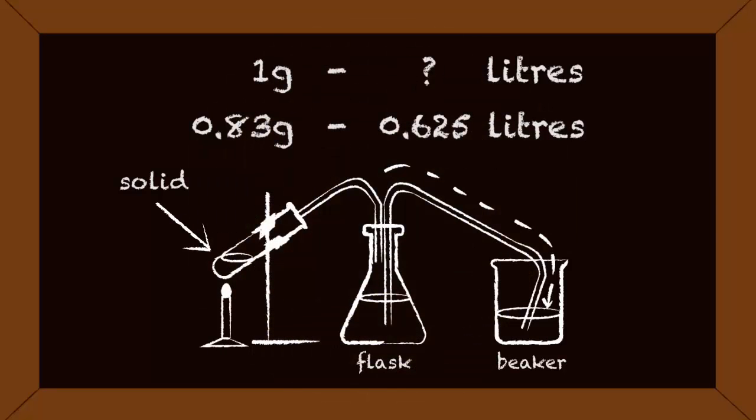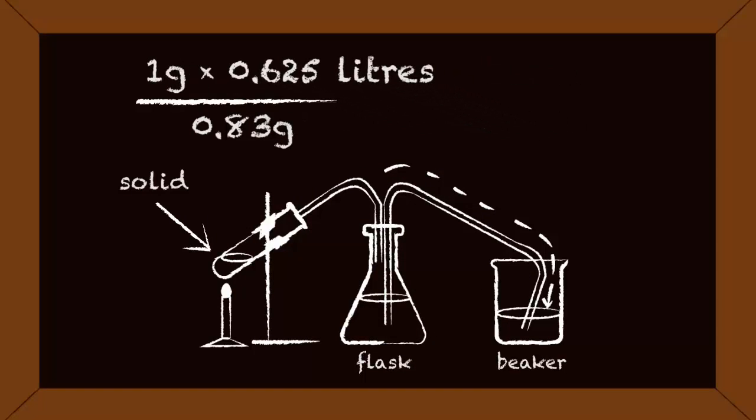The answer is to divide 0.625 liters of oxygen produced by 0.83 grams. This means that 1 gram of oxygen gives you 0.753 liters of oxygen.